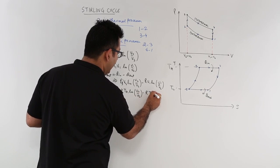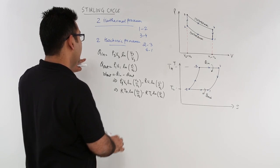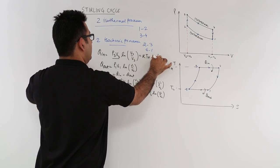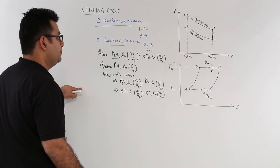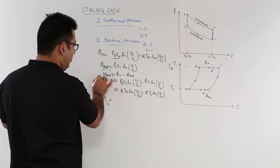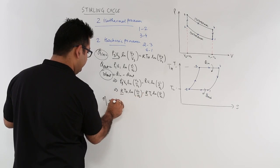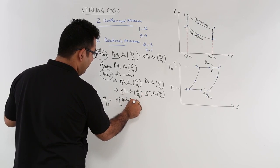And this would be minus R into Tl natural log V1 by V2. Similarly, I can replace this P3 V3 by R into Th natural log V4 by V3. So let us get an expression for the efficiency of the Stirling cycle, that is, work output upon heat input. You can take R common from it. You have Th into log V4 by V3.